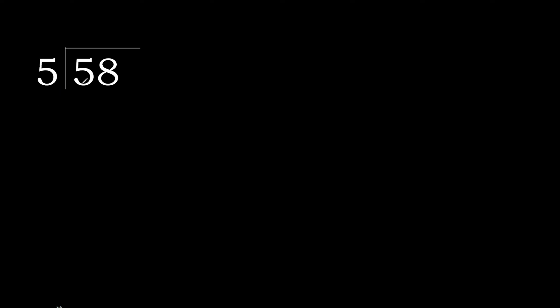58 divided by 5. 5 is not less, therefore start with 5. Here, 5 multiplied by which number is nearest to 5 but not greater? 5 multiplied by 2 is 10 — that is greater. 5 multiplied by 1 is 5, which is not greater. 5 minus 5 is 0.